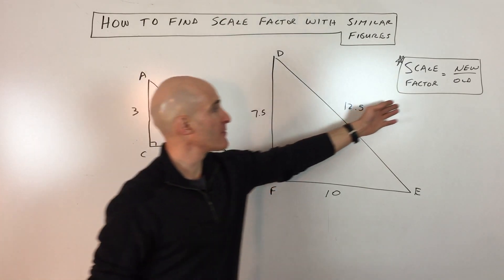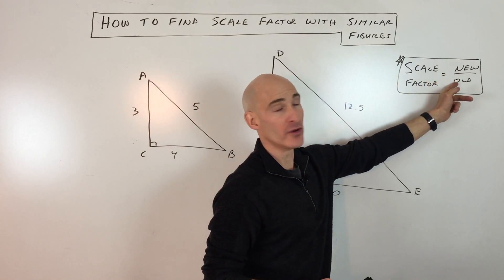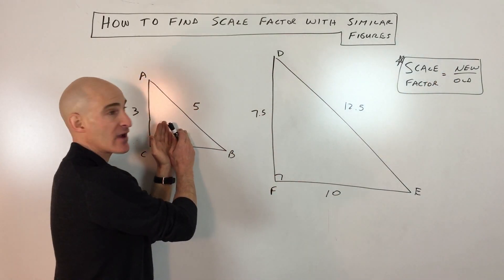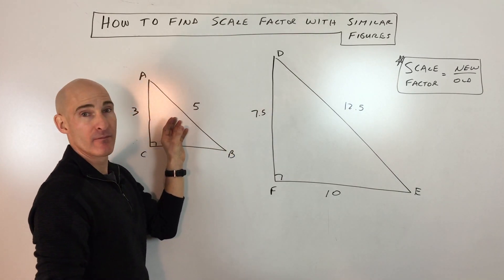And the formula I like to remember, this is just a simple way of doing it, is just think about new divided by old. So if I'm going from this triangle to this triangle, this is my new triangle, and I'm going to divide by the old triangle.